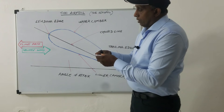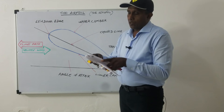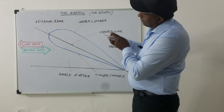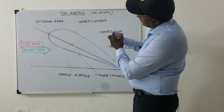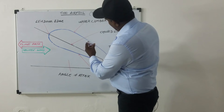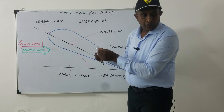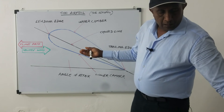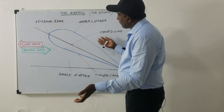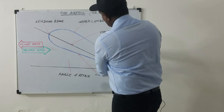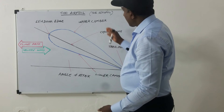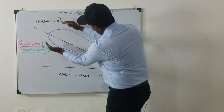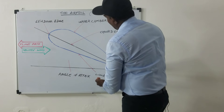Now let's see what the airfoil section is. If you see the cross section of the wing of an airplane, you can see the shape — it looks like this. This is called the airfoil shape. This is the shape of the wings. Not only the wings, but also propellers, the aircraft body itself, and most of the parts are designed in this shape. This is called the airfoil shape.